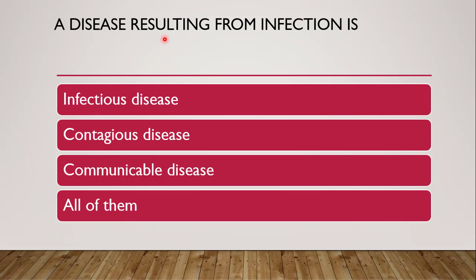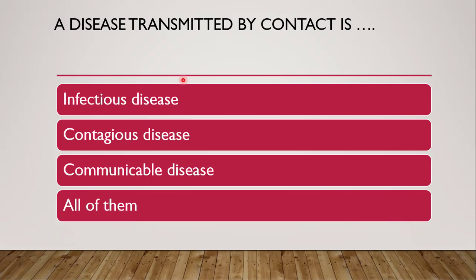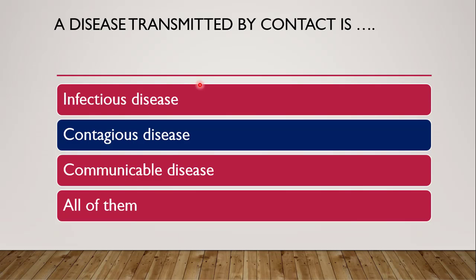Next question: a disease resulting from infection — whether it is an infectious disease, a contagious disease, a communicable disease, or all of them. The correct answer is contagious disease. Contagious diseases spread by contact; for example, scabies and trachoma are transmitted by contact, so they are contagious.